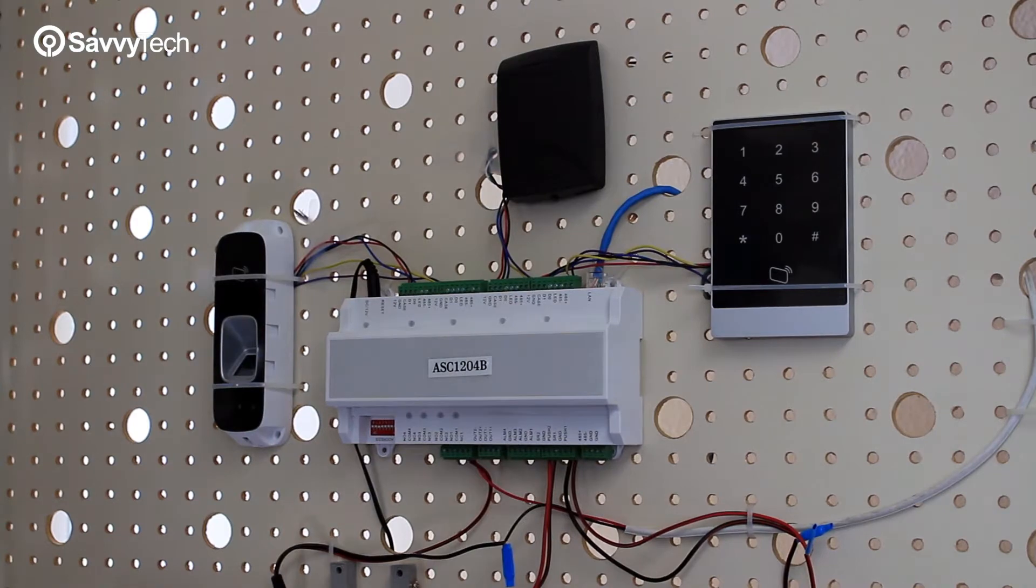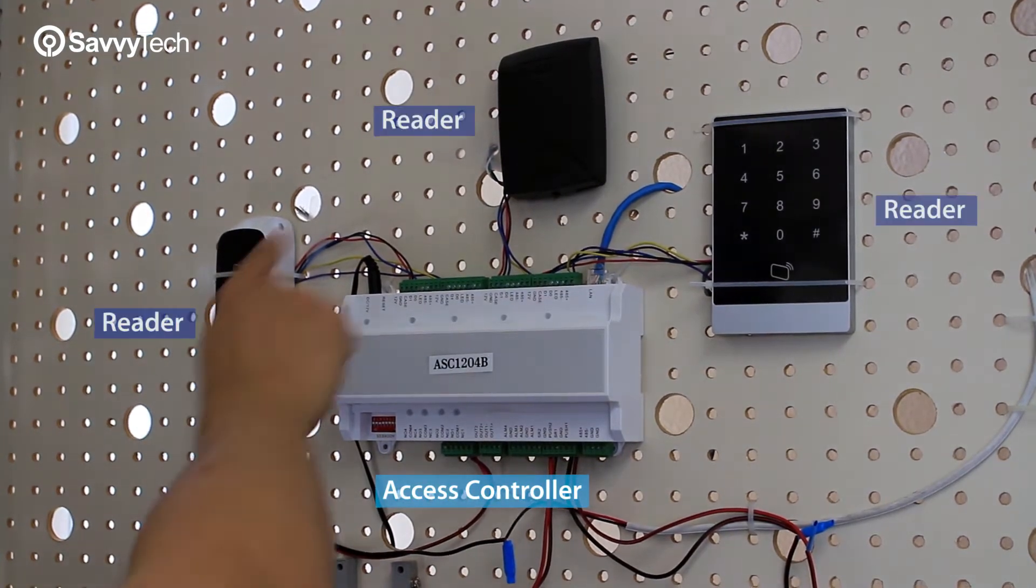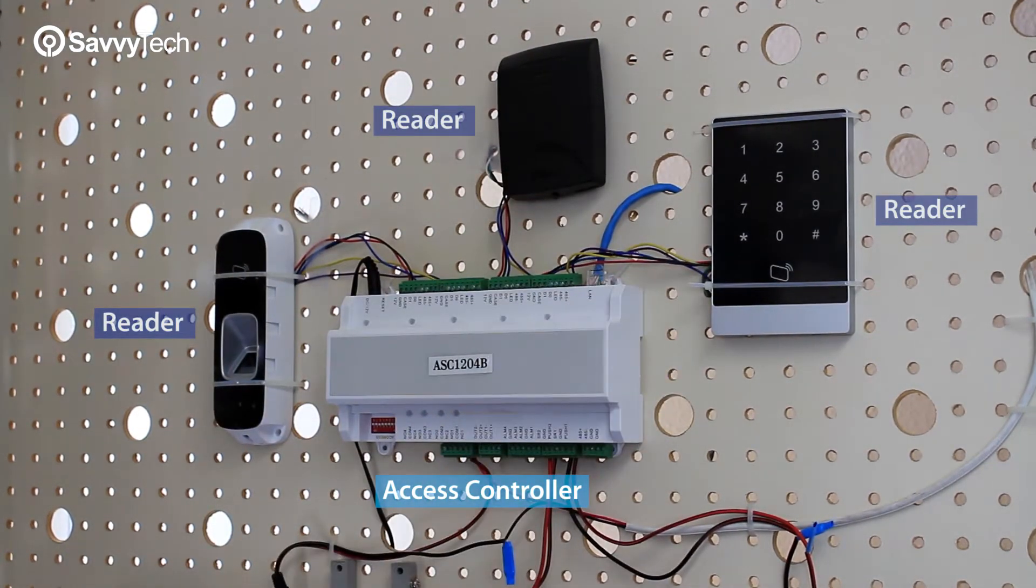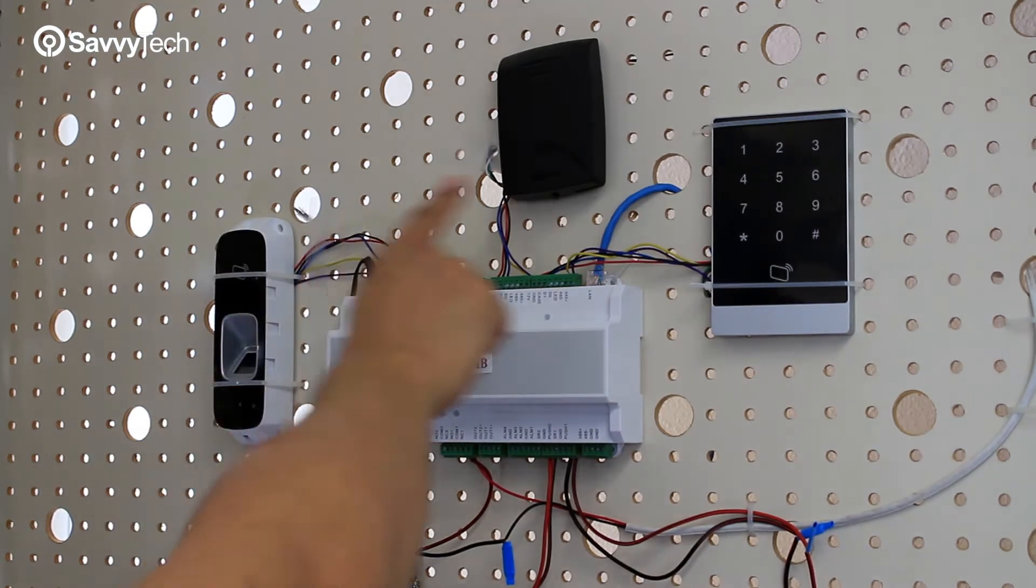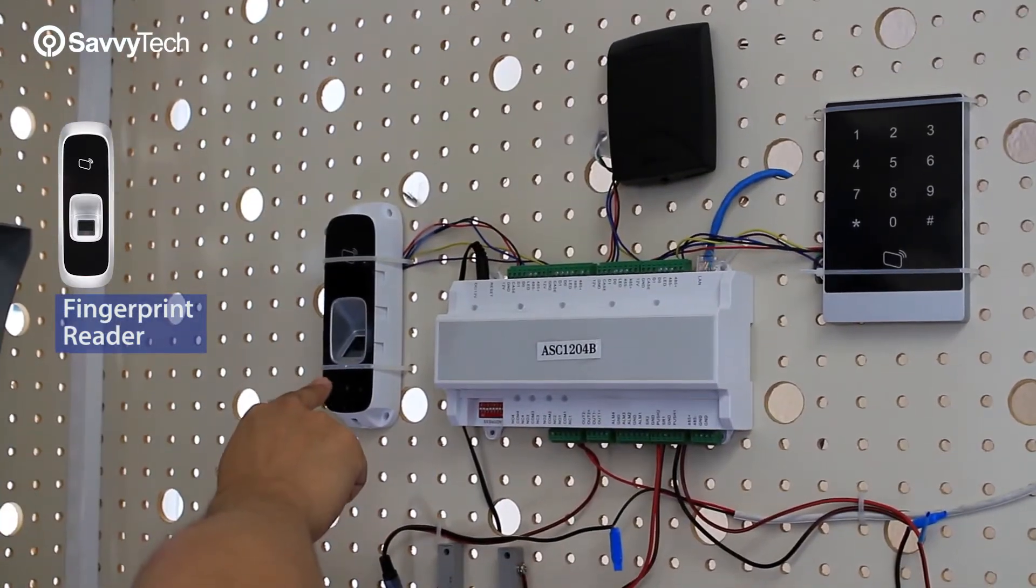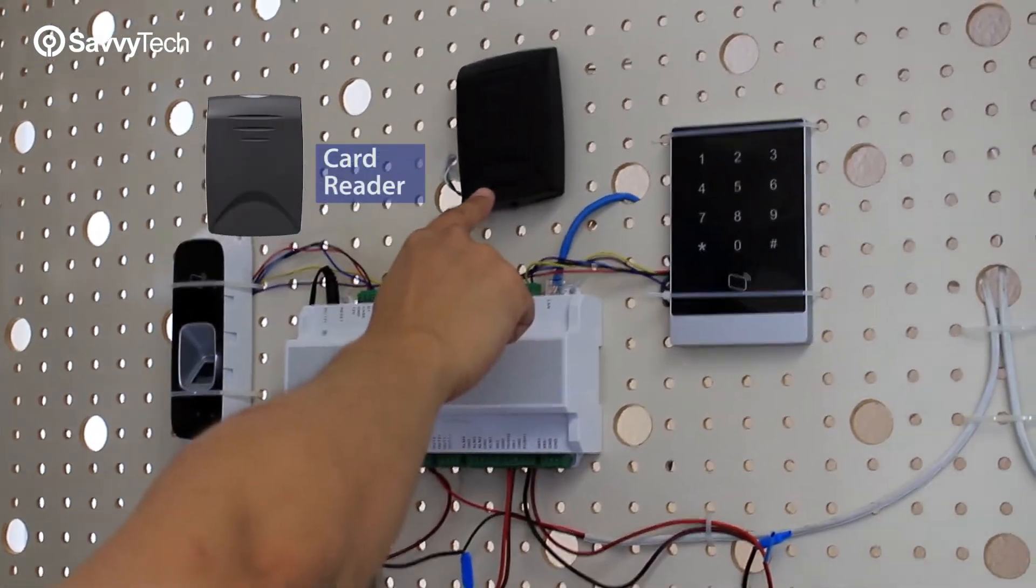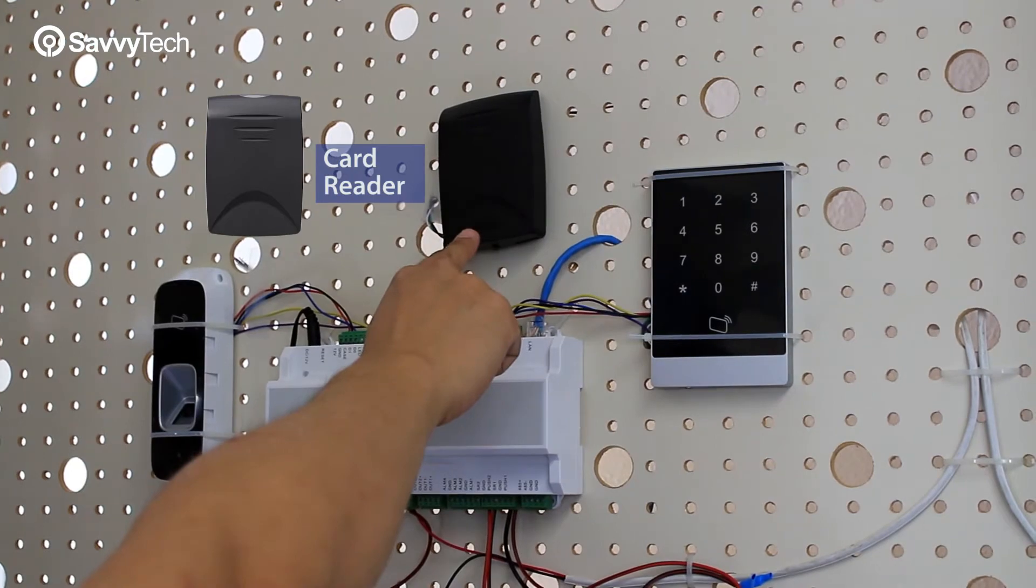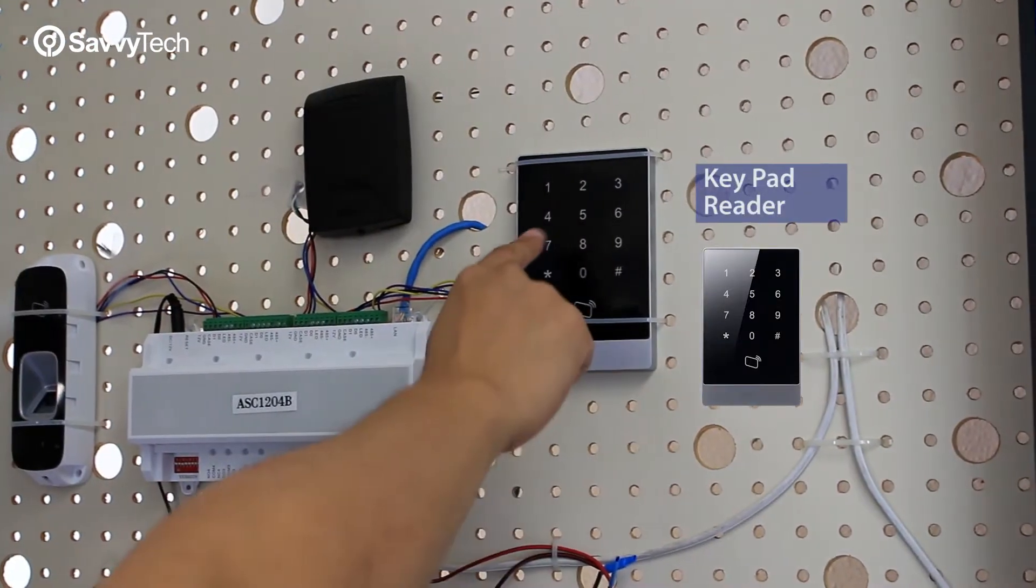The next thing we're going to do is connect the different card readers to the unit itself. There's various ways that you can register a user. One is to use a fingerprint reader where a person places a finger and scans a fingerprint. The second method is to scan an ID card, and the third method is to input a passcode.